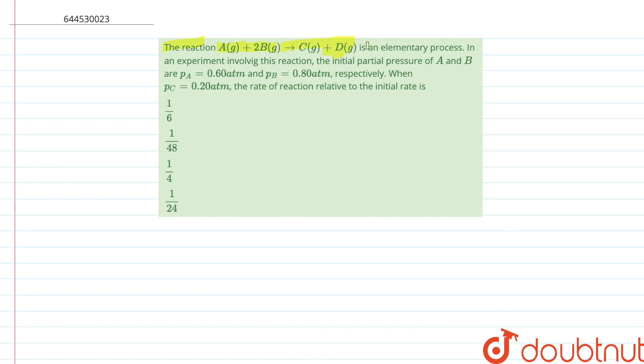to C plus D is an elementary process. In an experiment involving this reaction, the initial partial pressure of A and B are 0.60 atmosphere, and of B is 0.80 atmosphere respectively. When a partial pressure of C is